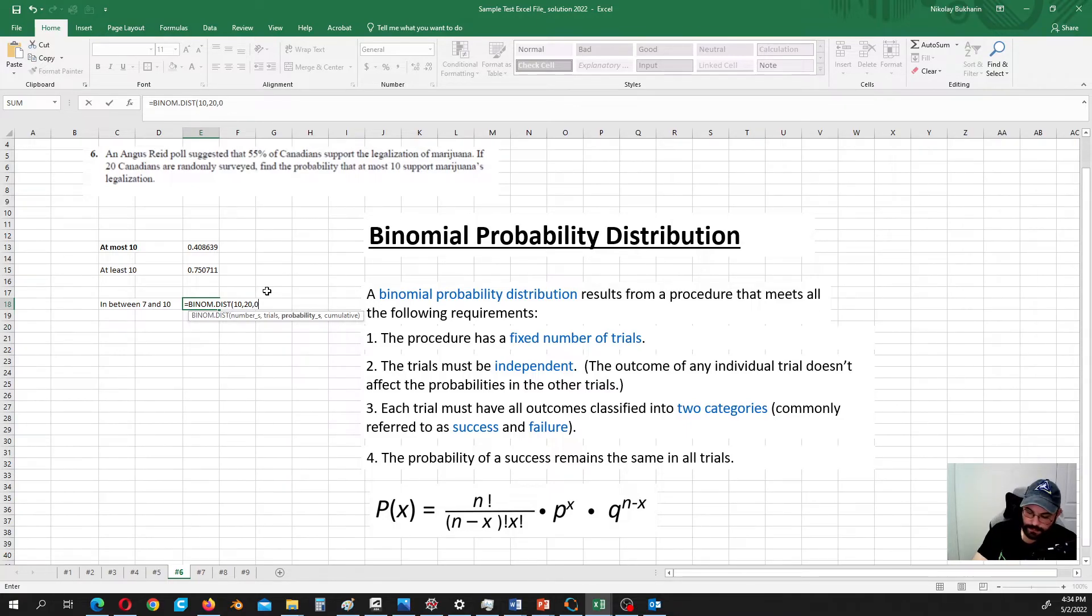Okay. So that's it. Probability of success is 0.55. And it is cumulative. And then minus binomial distribution. And then here we have 6. Number of trials is 20. Probability of success is 0.55. And it is cumulative. Okay. So that's it.